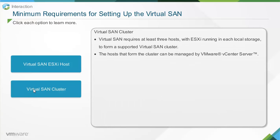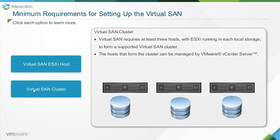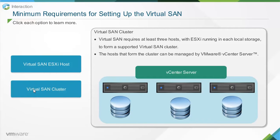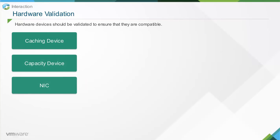The Virtual SAN ESXi host and cluster must satisfy a predefined set of hardware and software requirements. Virtual SAN requires at least three hosts with ESXi running with local storage to form a supported Virtual SAN cluster. The hosts that form the cluster can be managed by VMware vCenter Server. Note that Virtual SAN supports only the hardware listed in the VMware Compatibility Guide, or VCG. Hardware devices must be validated to ensure they are compatible and listed in the VCG.